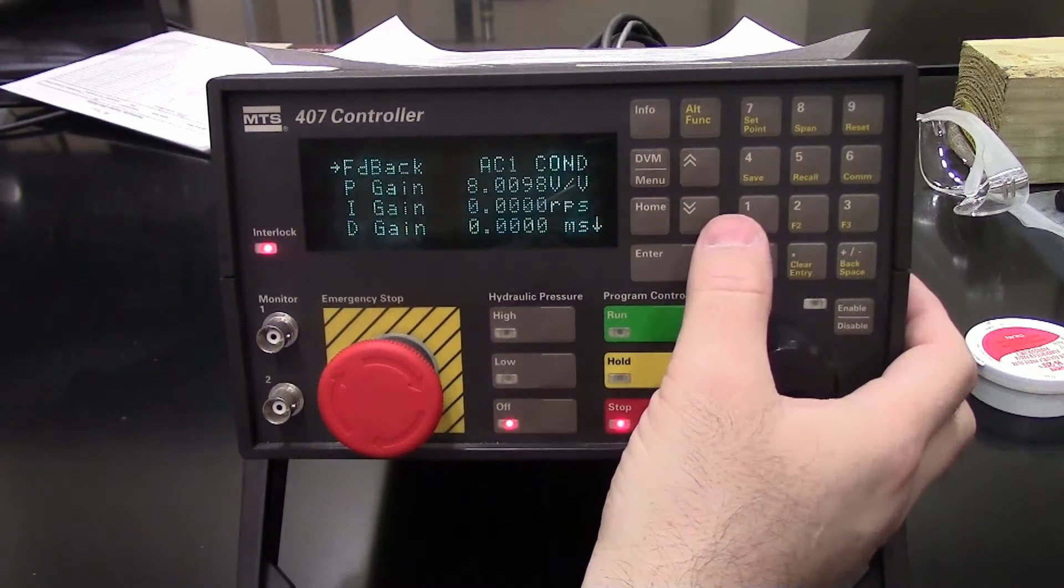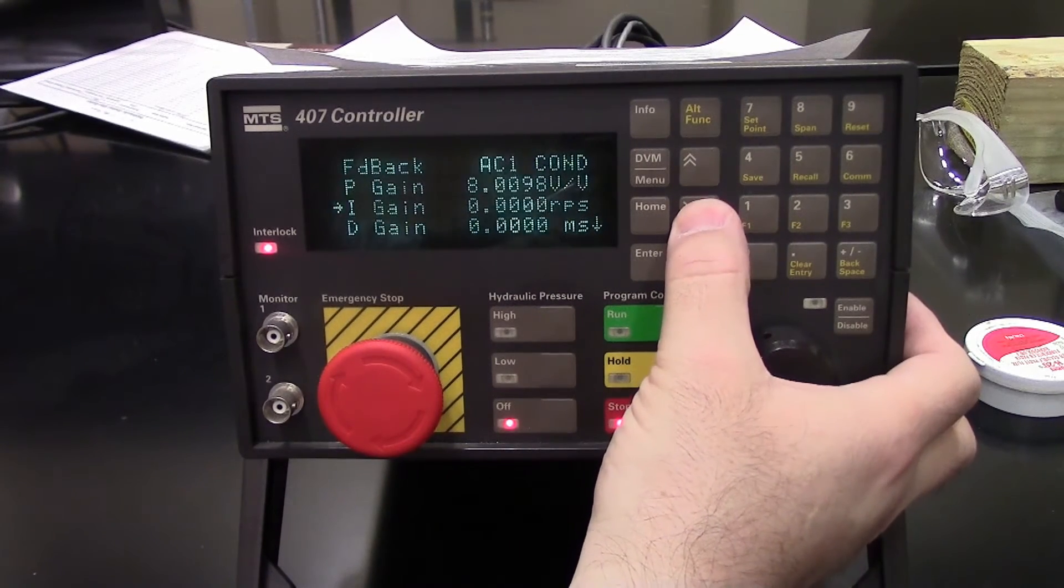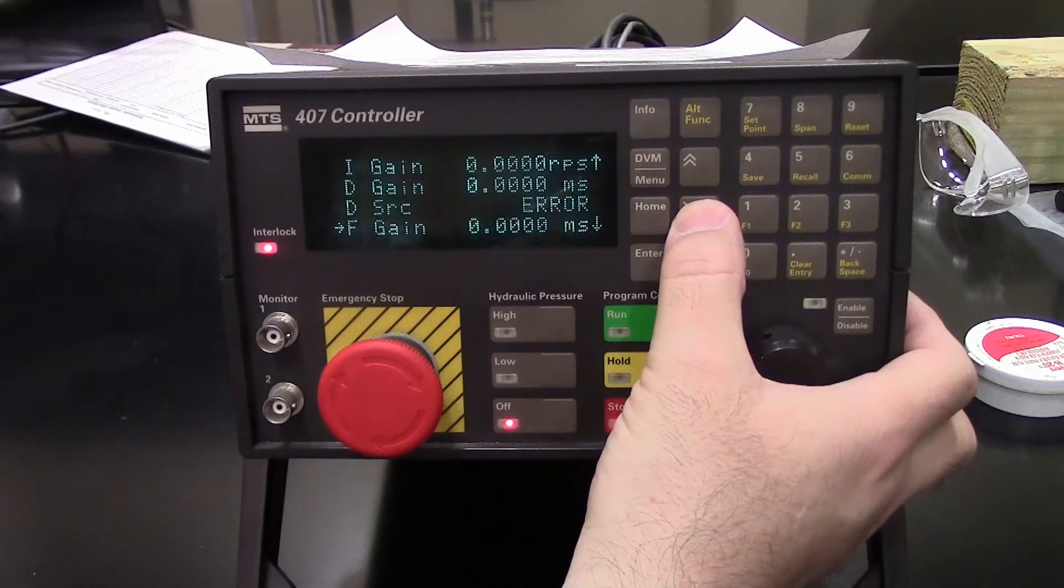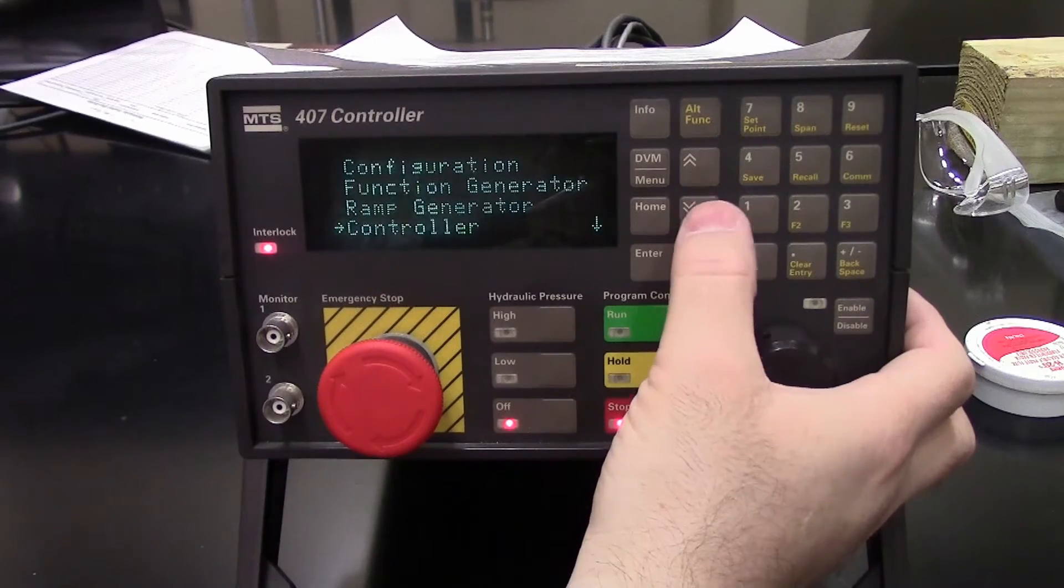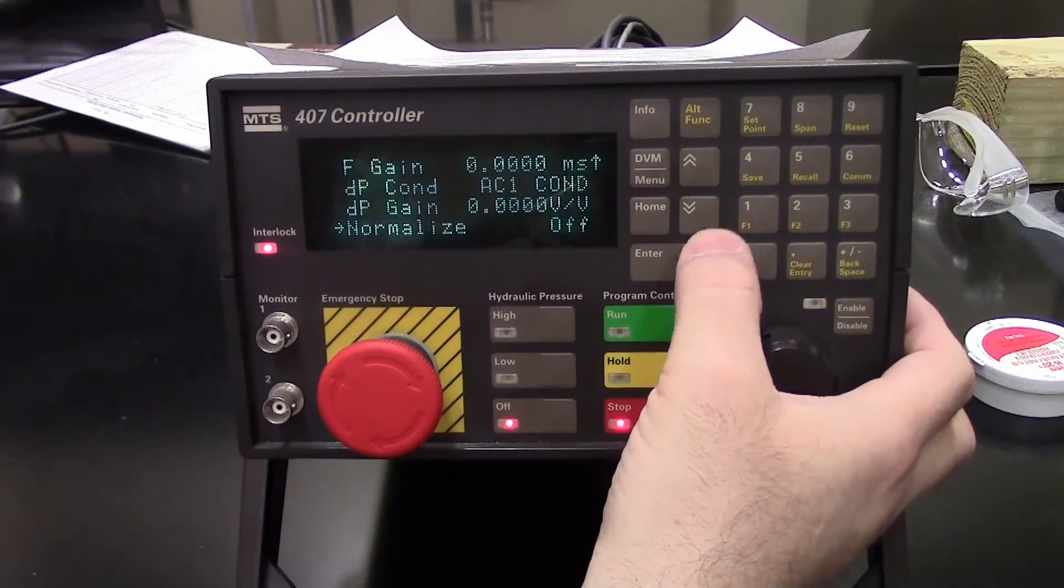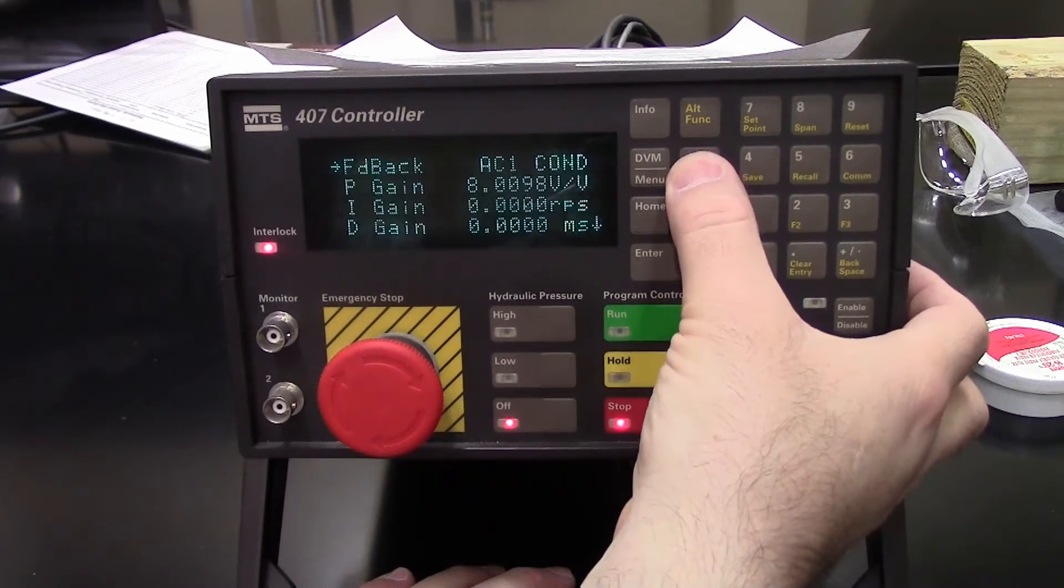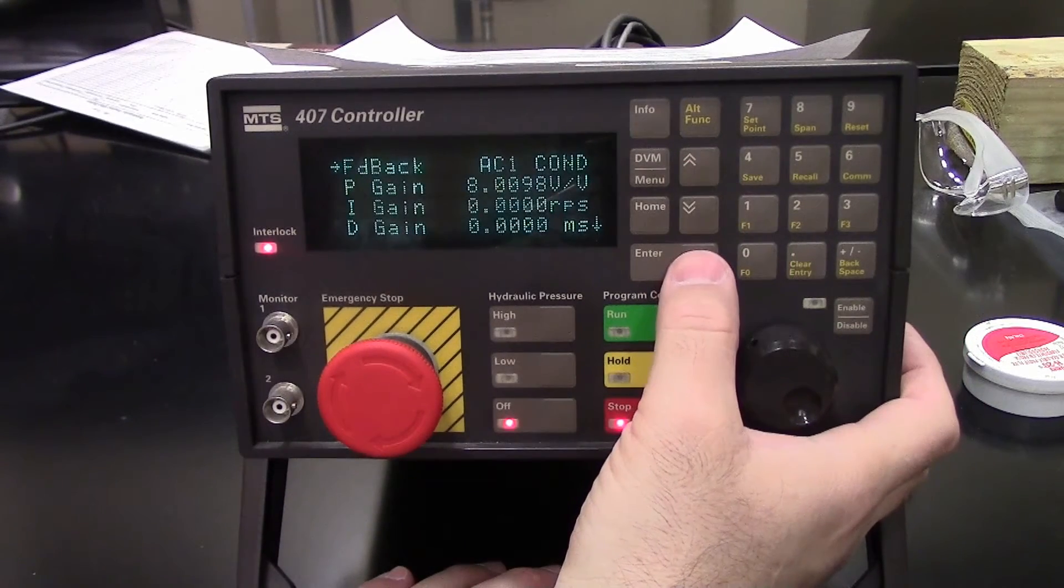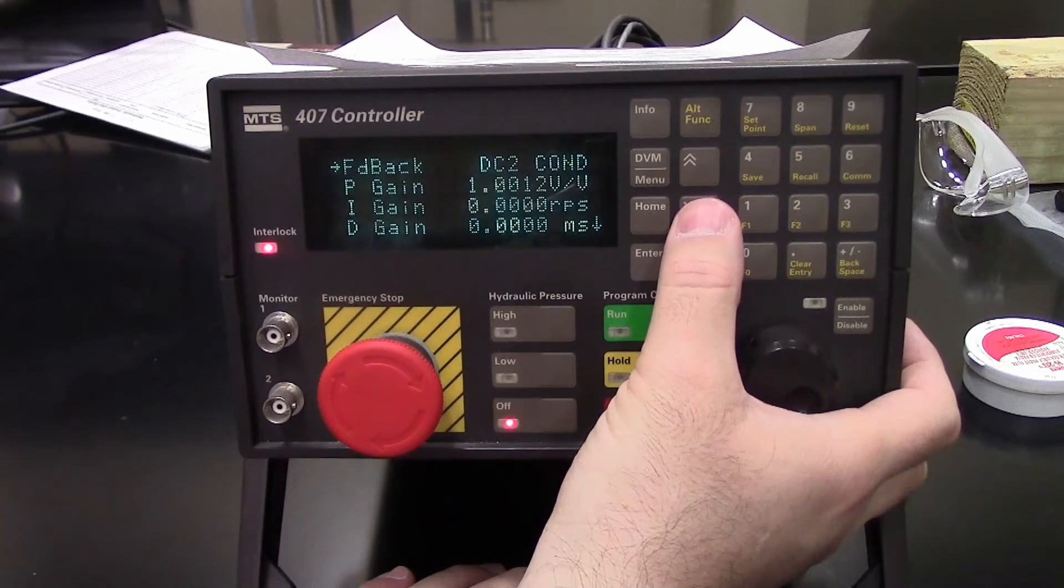Maybe more important is the controller. This is for the AC1 conditioner. Here's the PID gains. Those would change depending on your system. If you want to change this to DC2 conditioner, then you hit enter. This also depends on whether you're in setup 1 or setup 2.